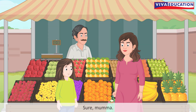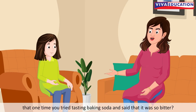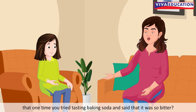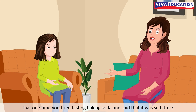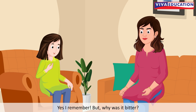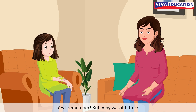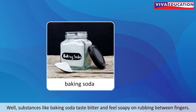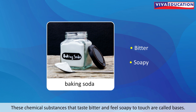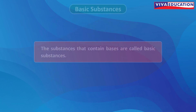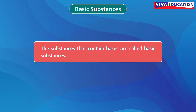Do you remember that one time you tried tasting baking soda and said that it was so bitter? Yes, I remember. But why was it bitter? Well, substances like baking soda taste bitter and feel soapy on rubbing between fingers. These chemical substances that taste bitter and feel soapy to touch are called bases. The substances that contain bases are called basic substances.